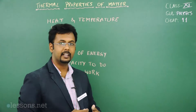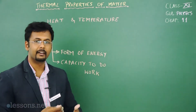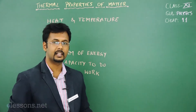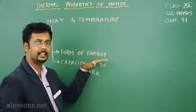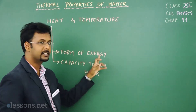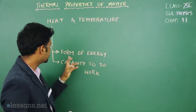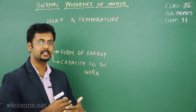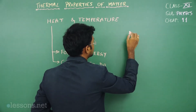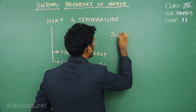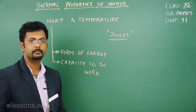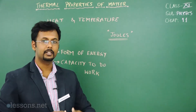When you say form of energy, there are different forms — sound energy, light energy, thermal energy, wind energy. In this chapter we'll be dealing specifically with thermal energy or heat energy. The SI unit of energy is joules, so the basic unit of energy is joule, and the SI unit of heat is also joules.